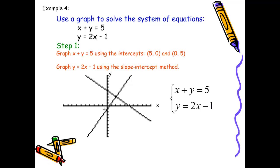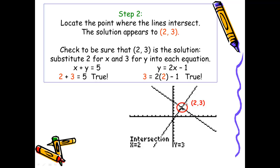I've completed step 1 and graphed both equations. Step 2 is to locate the point of intersection, which is at (2, 3). Sometimes on a graph — whether using a graphing calculator or by hand — it can be tricky to tell exactly what the coordinates are; the graphing calculator can help with that. When graphing by hand, it's always a good idea to plug the apparent solution back into both equations to verify. Substituting into x plus y equals 5, I get 2 plus 3 equals 5 — true. And for y equals 2x minus 1, substituting 2 for x and 3 for y also yields a true equation. So yes, (2, 3) is the solution to this system.